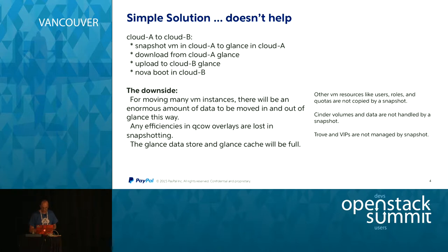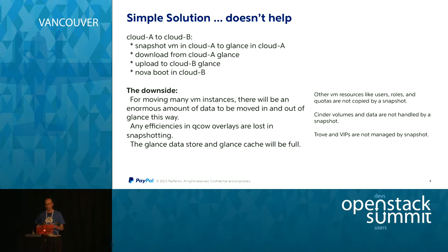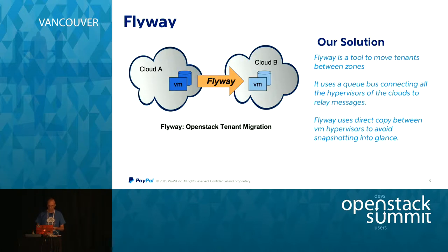Users' roles and quotas — that's an important point. Using Flyway, it'll copy all of your user information: the tenant, the members of the tenant, their roles in the tenant, the quota of the tenant — all of that gets copied over. If you just snapshot, none of that happens and you'd have to do it all yourself. So Flyway copies VMs between clouds. It's designed around a message bus queue, and it copies directly between the hypervisors.